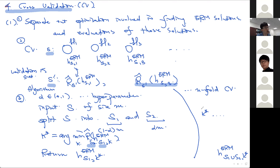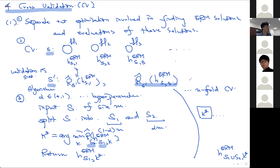N-fold cross-validation focuses more on the generalization ability of each hypothesis set — it picks a hypothesis set that generalizes well, then uses that specific hypothesis set. That's it for today. We will talk more about cross-validation and n-fold cross-validation next week. Thank you.